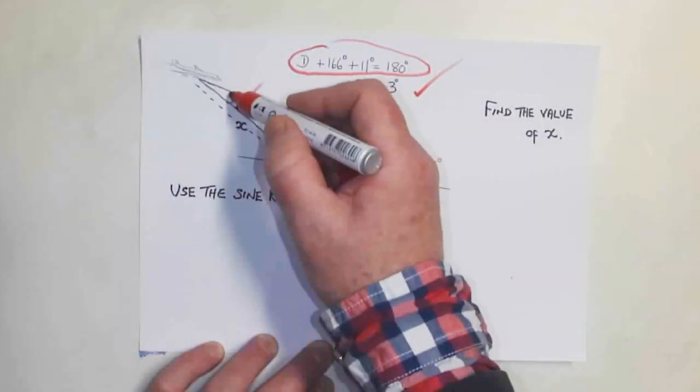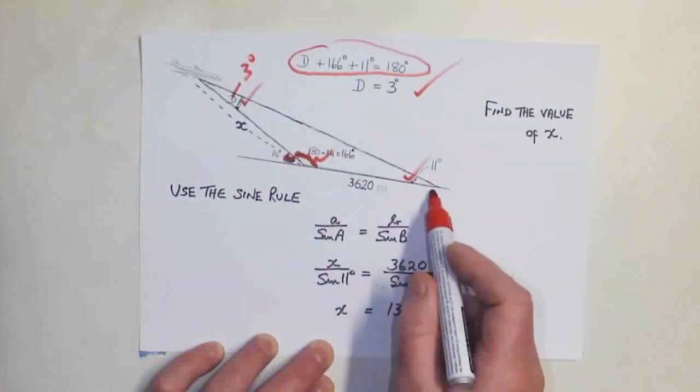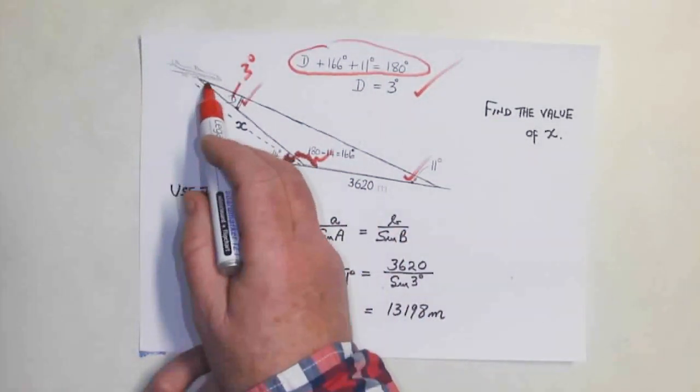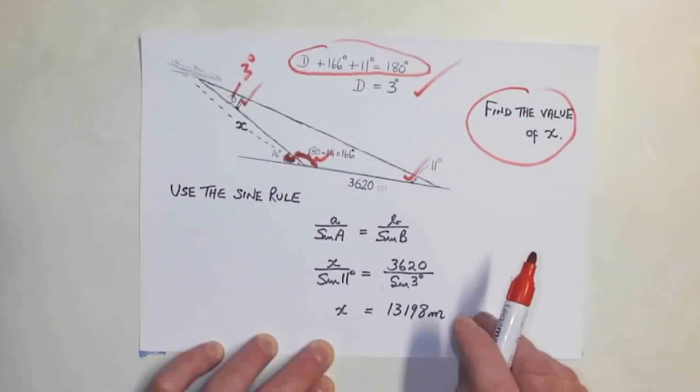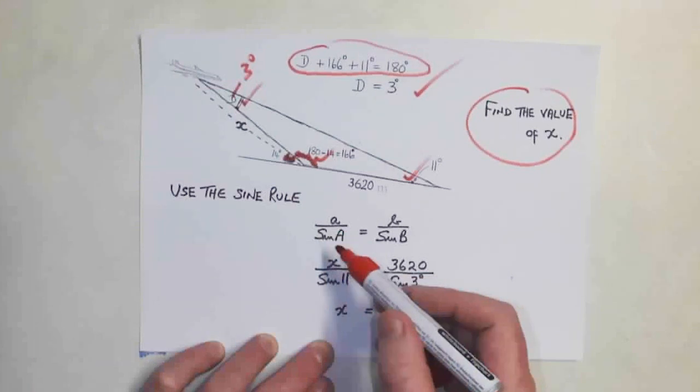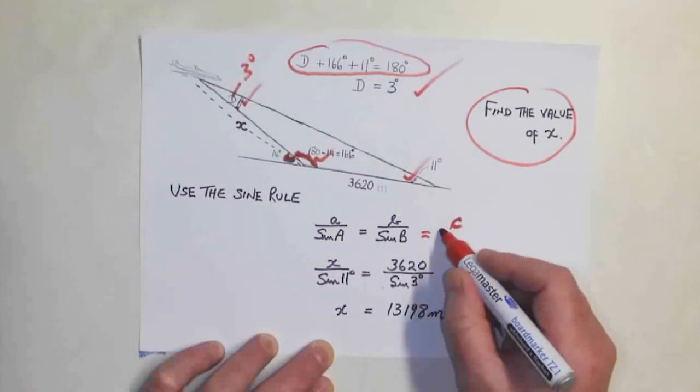This here is 3620 meters, this here is the distance, and I've called it x. So let's find the value of x. We're using the sine rule, which is a over sine A equals b over sine B equals c over sine C.